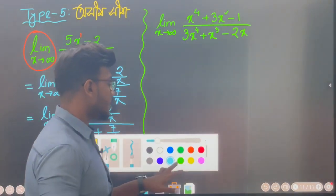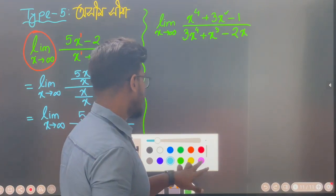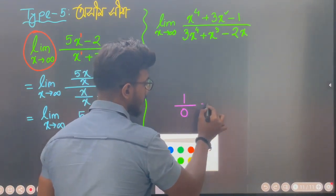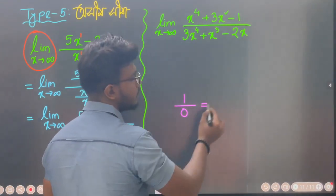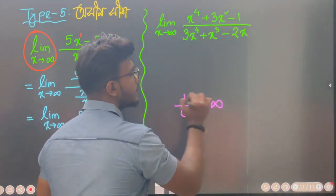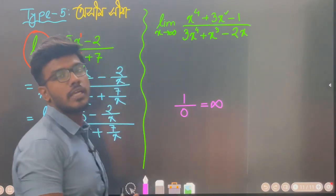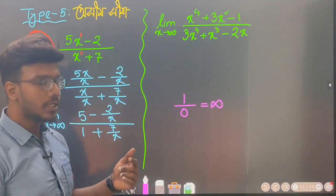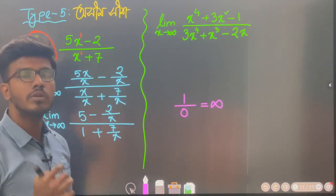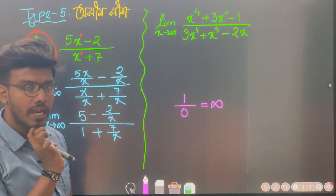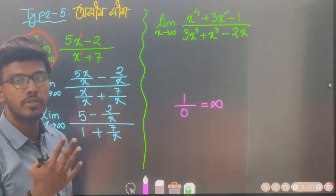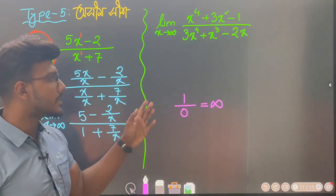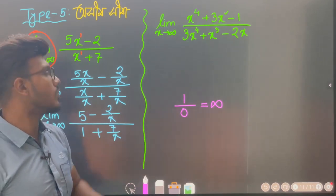Now let's take a look at this. We have 1 by 0. 1 by 0 means infinity. When we see that 1 by 0 means infinity, 1 by 0 means plus or minus infinity — that means plus infinity and negative infinity.